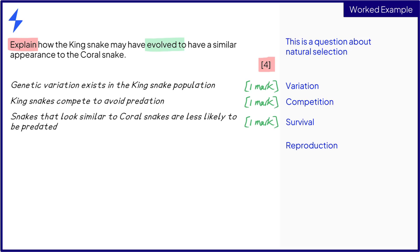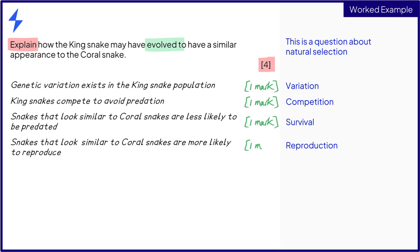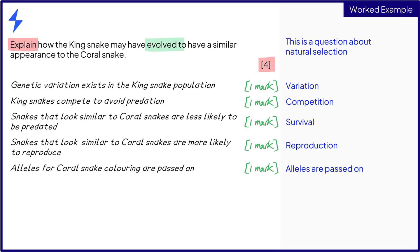Survivors have increased reproduction opportunities, so the kingsnakes that look like coral snakes are more likely to reproduce. Reproduction allows advantageous alleles to be passed on. Here the alleles for coral snake colouring are passed on. The result of this is that the advantageous characteristic of coral snake colouring becomes more common in the kingsnake population.